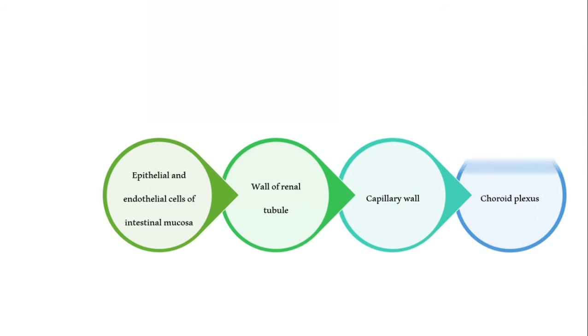Now what are the examples? It is seen in the epithelial and the endothelial or the lining of blood vessels seen in intestinal mucosa. Then it is seen in the kidney in the wall of the renal tubule. It is seen in the blood vessels in the capillary wall. Then it is seen in the brain in the choroid plexus.